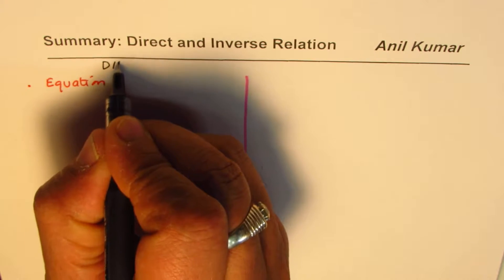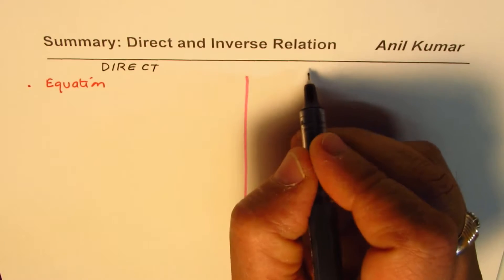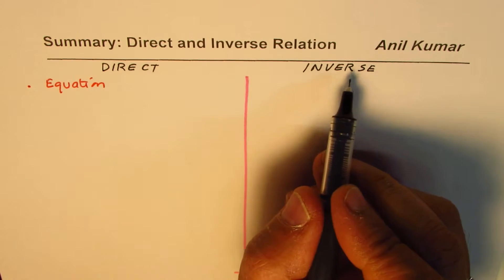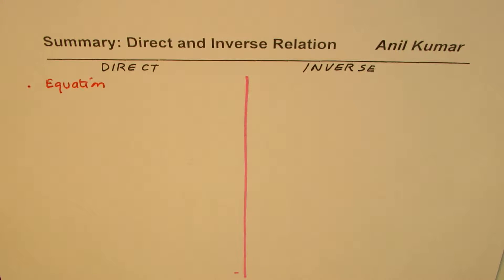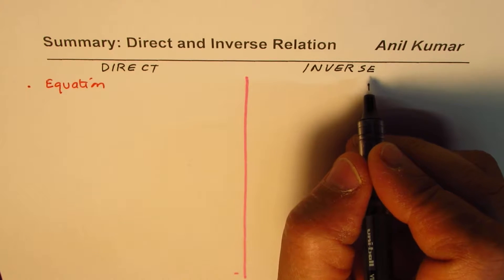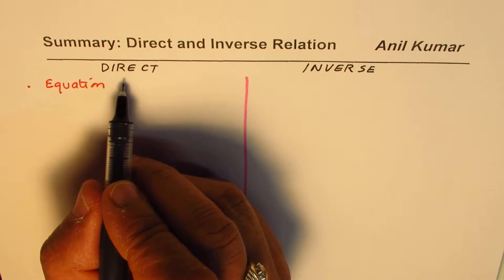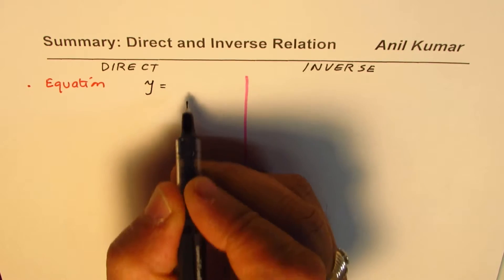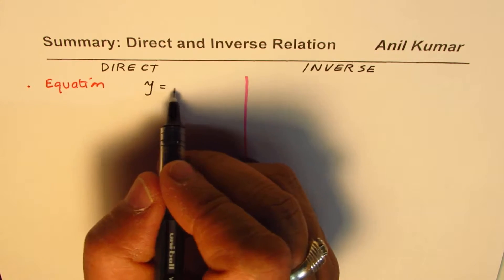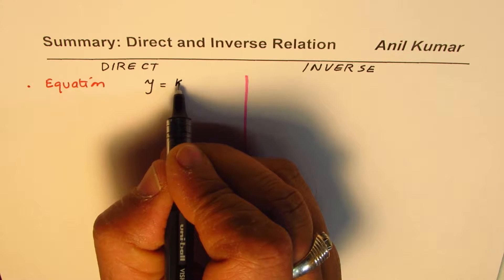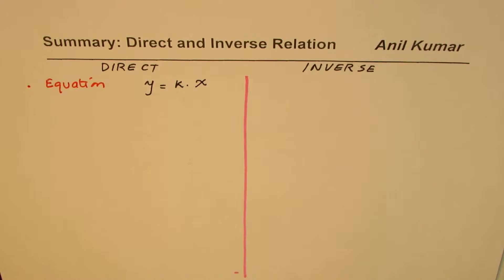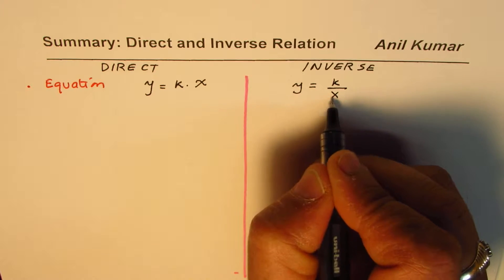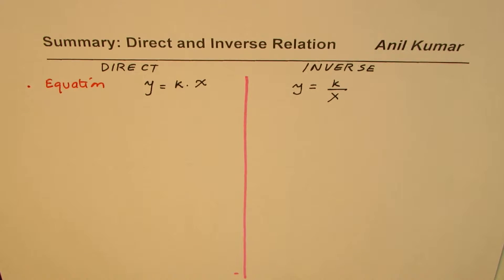Let me write direct relation on the left side and inverse on the right. Remember the two terms are direct and inverse — not indirect. For a direct relation, the dependent variable y equals a constant times the independent variable x. In inverse relation, y equals k divided by x.